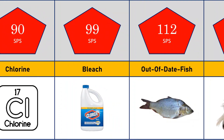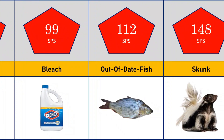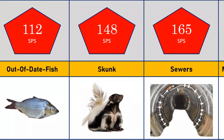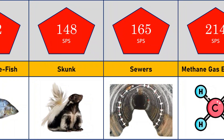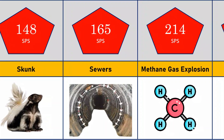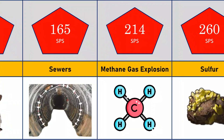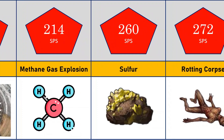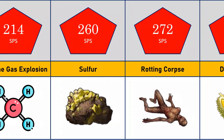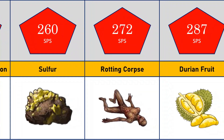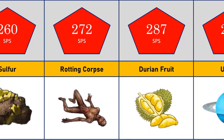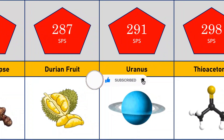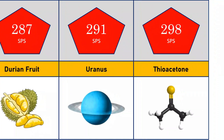Smell of dead fish: 112 SBS. Smell of skunk: 148 SBS. Smell of sewers: 165 SBS. Smell of methane gas explosion: 214 SBS. Smell of sulfur: 260 SBS. Smell of rotting corpse: 272 SBS. Smell of durian fruit: 287 SBS. Smell of Uranus: 291 SBS. Smell of thioacetone: 298 SBS.